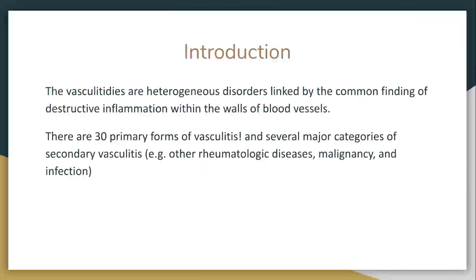The vasculitides are heterogeneous, but they're all linked by the finding of inflammation in the walls of blood vessels. There are 30 primary forms, but then there are lots of other types — specifically my patients, lupus patients. Always be on the lookout for infection, malignancy, things like that which cause secondary vasculitis. We've had many patients, older ones, that just ended up having an infection.